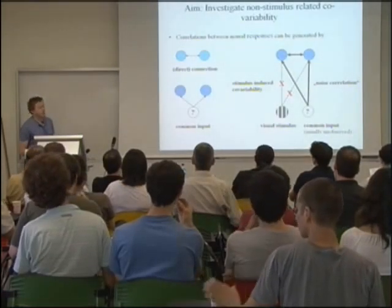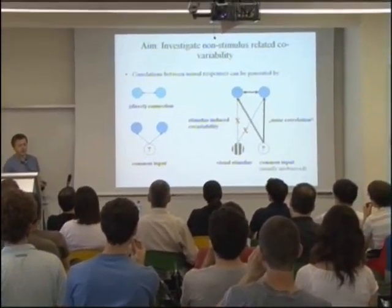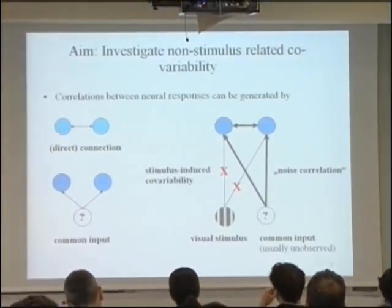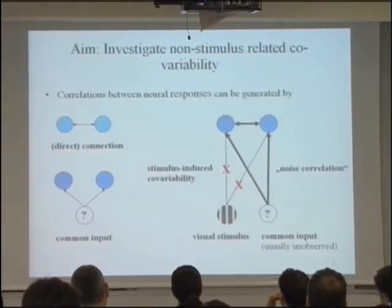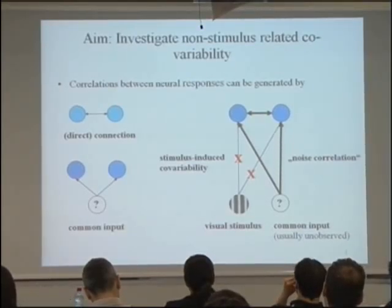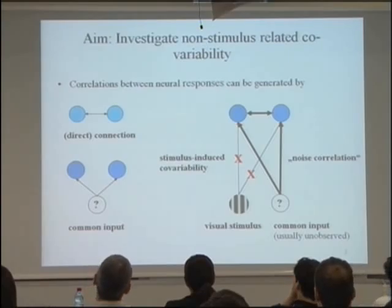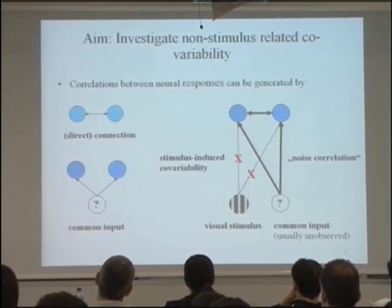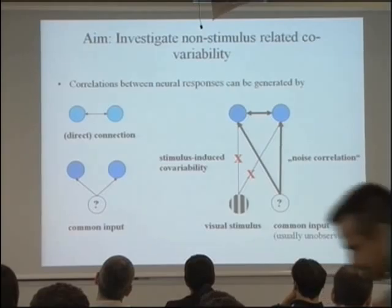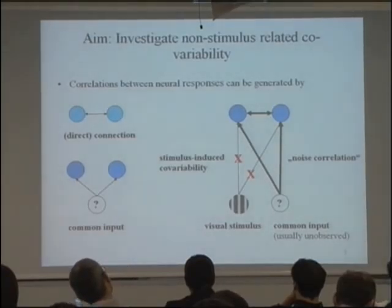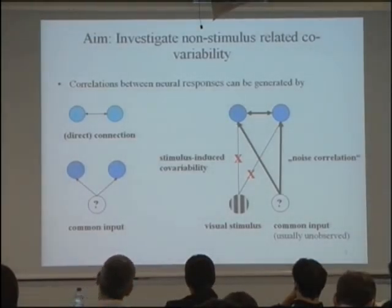The general aim is to investigate non-stimulus-related co-variability. We would like to remove the stimulus-induced component. One could think about inducing correlations between two neurons by either having a direct connection, maybe monosynaptically, or by two neurons sharing a common input source. The cartoon I adopt for this data is we might have direct connections between nearby cells and a common input source, which is usually unobserved, plus a visual stimulus. I will use the noise correlation approach and the GLM approach, because they're not actually equivalent.